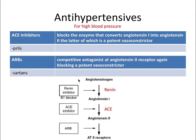We have a couple of options. A renin inhibitor would be a beta-1 blocker — an adrenergic antagonist like metoprolol, which we covered in the autonomic nervous system pharmacology video. We could also use an ACE inhibitor to block step two; ACE inhibitors all end in '-pril,' and lisinopril is a prime example. The final option is to block step three with angiotensin receptor blockers, or ARBs — these all end in '-sartan,' and losartan is an example.